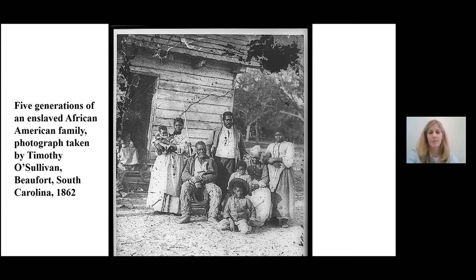American slavery began in 1619 when the first enslaved Africans were sold to the colonists of Jamestown. These men and women came from present-day Angola. They spoke a Bantu language called Kambundu, and they possessed important farming and husbandry skills. After being captured in West Africa, they were sold to Portuguese slavers and transported across the Atlantic Ocean on a ship called the San Juan Bautista on its way to Mexico. During their journey, 50 to 60 African men and women were captured by two English privateers, the White Lion and the Treasurer, then sold to the settlers of Virginia at, as colonist John Rolfe recorded, quote, the best and easiest rates they could, quote.